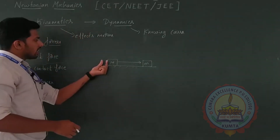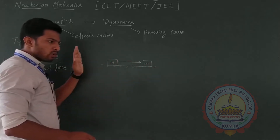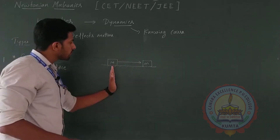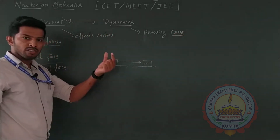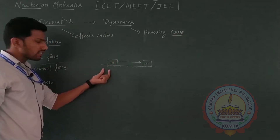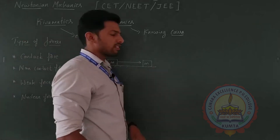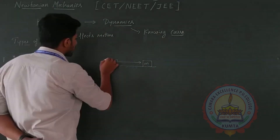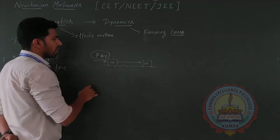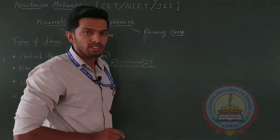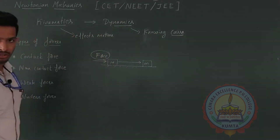The object will move from this position to that position only if you apply something on it. What we apply is what we call the cause of motion — something that makes the object move from one position to another. The first thing that comes to mind is force, denoted as capital F. When we apply force on an object, that object will move from one position to another. So the major cause for motion is nothing but force.